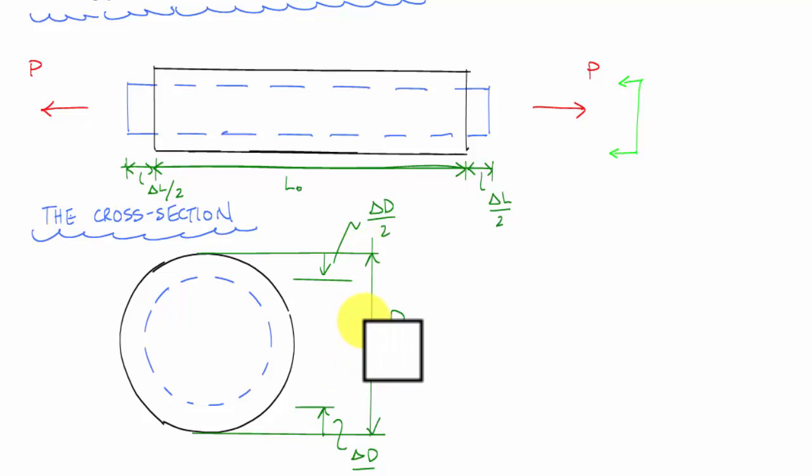And knowing these dimensions, I could calculate the final length or the final diameter, compare it to the original length and the original diameter, and then calculate essentially the longitudinal strain and the lateral strain. And this lateral strain would be a contraction, so it would be a negative strain. The final diameter would be smaller than the original diameter.